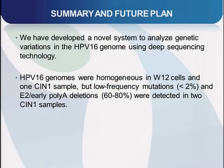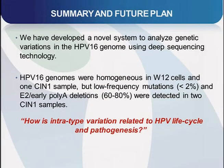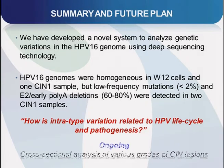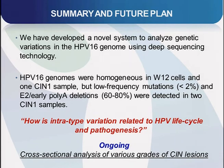Let me summarize my talk. We have developed a novel system to analyze genetic variations in the HPV-16 genome using deep sequencing technology. By using this system, we found HPV-16 genomes were homogeneous in W12 cells and one CIN1 sample, but low-level mutations and deletions were found in two CIN1 samples. We need more data to analyze the biological meaning of introtype variation in HPV-16, and we are now analyzing more samples of various grades of CIN lesions.